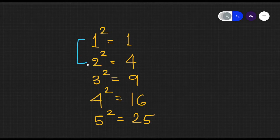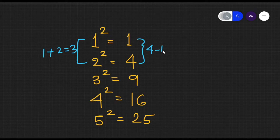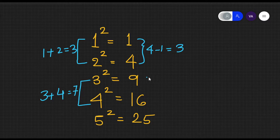If we observe, we are referring to consecutive numbers. 1 plus 2 is equal to 3, and the difference between their squares: 4 minus 1 is also 3. Take any consecutive pair — let's take 3 and 4. So 3 plus 4 is equal to 7, and the difference between the squares: 16 minus 9 is also 7.